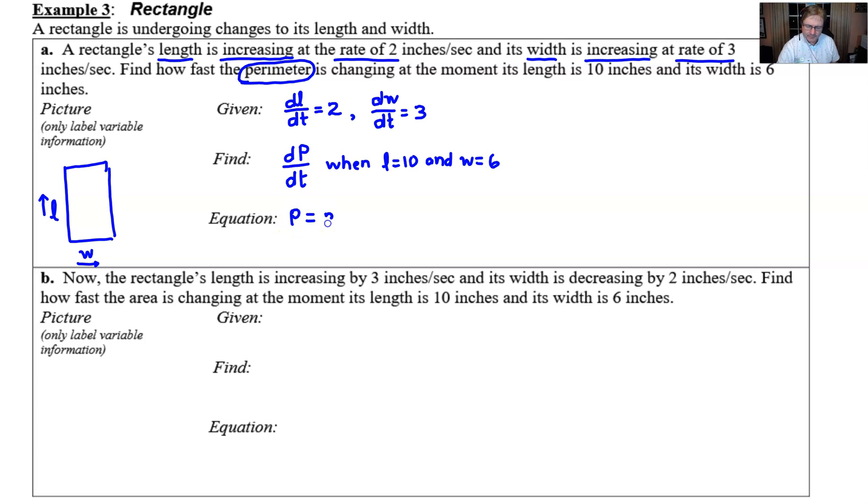So P would be 2 times L plus 2 times W. And once you have gotten all four of your fields filled out with the information, we are ready to do a little calculus.